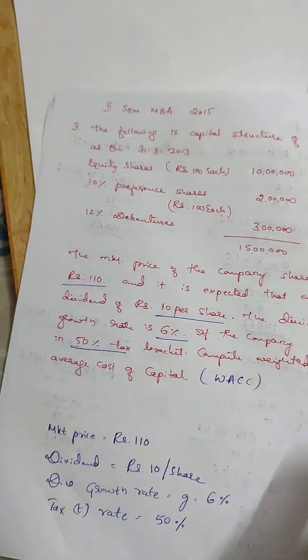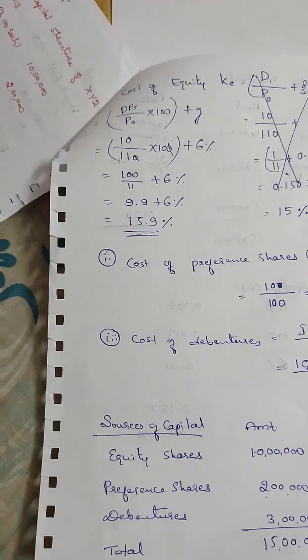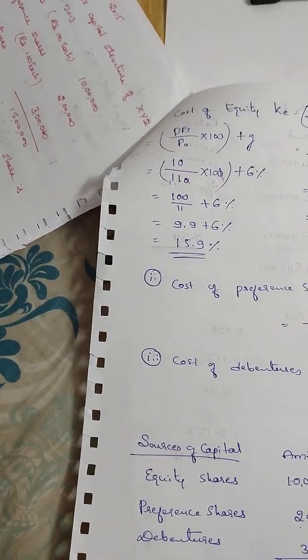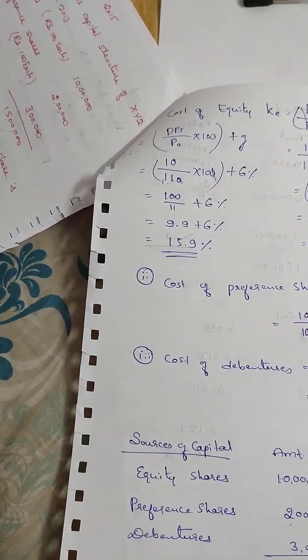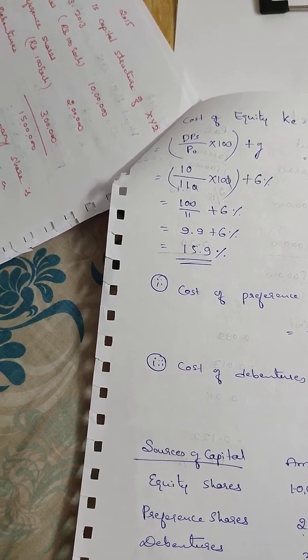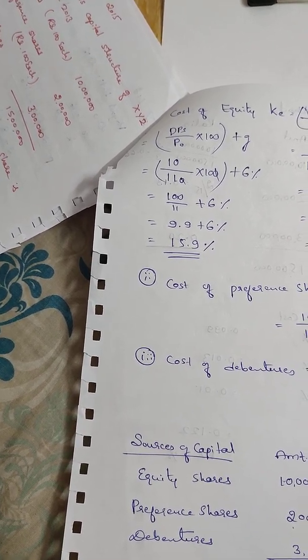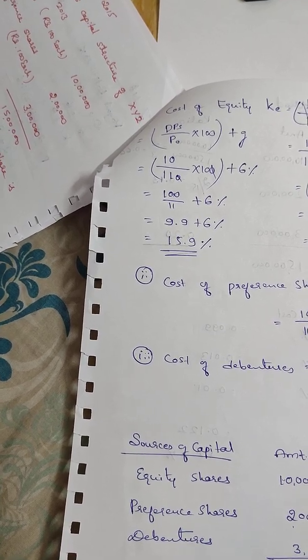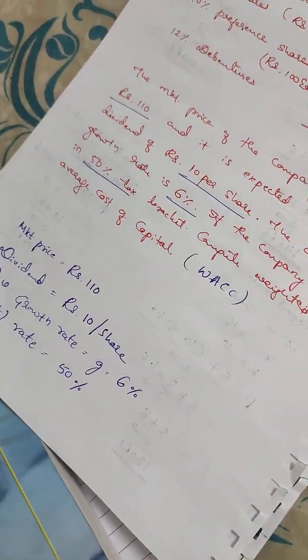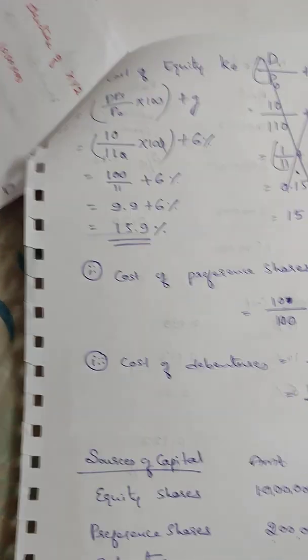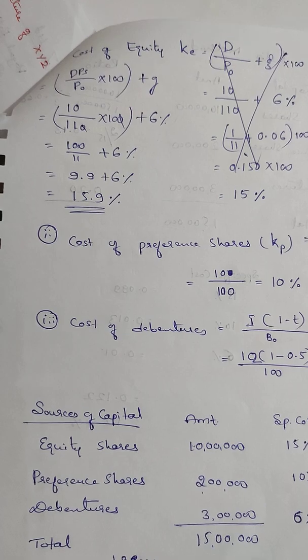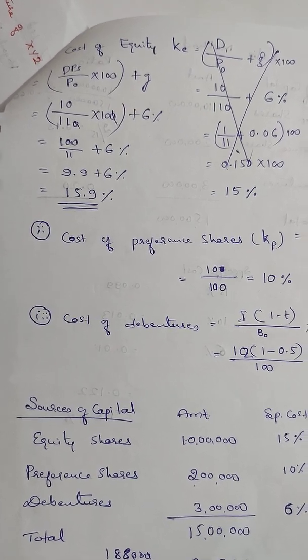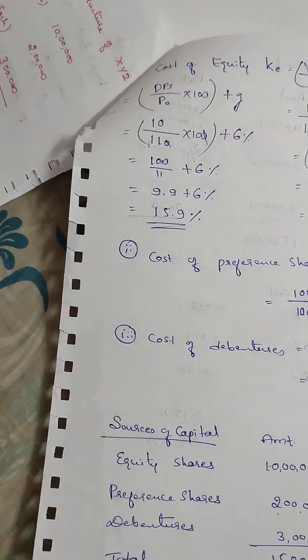Cost of equity is equal to DPS divided by P0, into 100, plus G. DPS here is the dividend, divided by P0 which is the market price, into 100, plus the growth rate of 6%. This gives us 15.9% as the cost of equity.